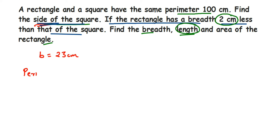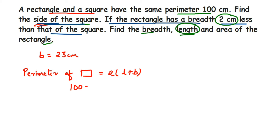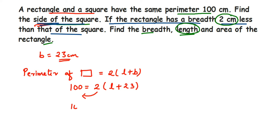The perimeter of a rectangle is 2 × (l + b). The perimeter is 100, so: 100 = 2 × (l + 23). I'll transpose 2 to the other side — since it's in multiplication, it comes in division: 100 ÷ 2 = l + 23. Cancelling, 100 ÷ 2 gives 50. So: 50 = l + 23.